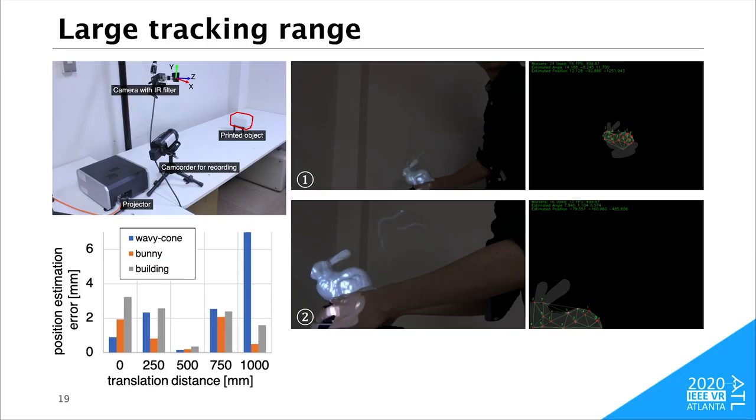We evaluated how accurately the system can estimate the pose of a projection object to check the tracking range. As a result, the system could estimate the position of each object with a small error relative to the translation distance, whose range was 1 meter in our experiment. We confirmed that the system works in a relatively large tracking range.